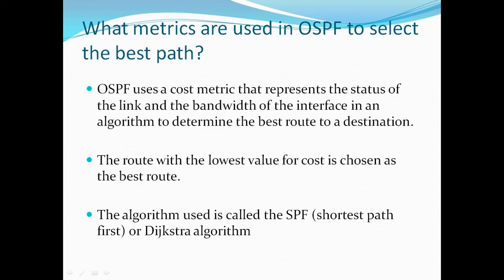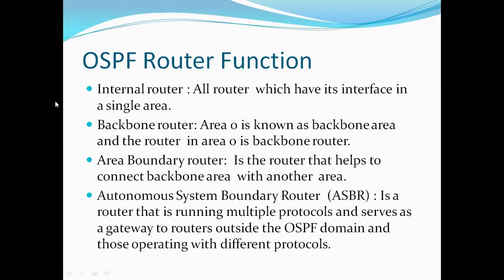OSPF uses a cost metric in an algorithm to determine the best route to a destination. The cost metric represents the status of the link and the bandwidth of the interface. The route with the lowest cost value is chosen as the best path. OSPF uses the SPF (Shortest Path First), also known as Dijkstra's algorithm.